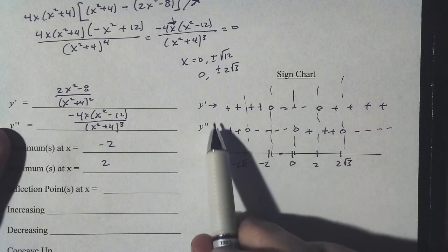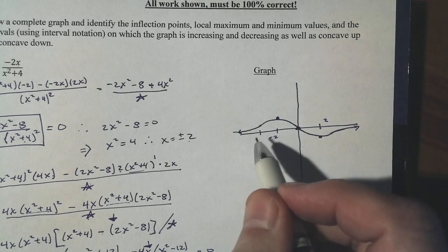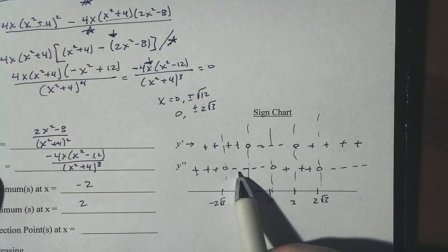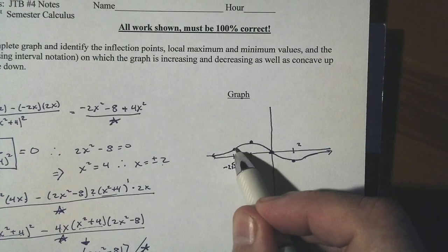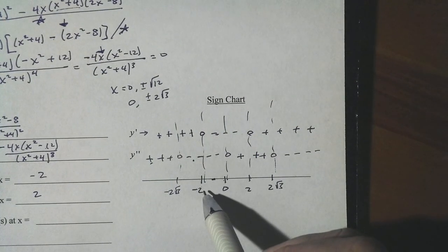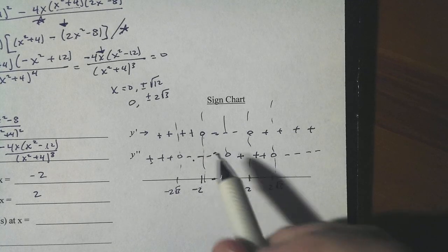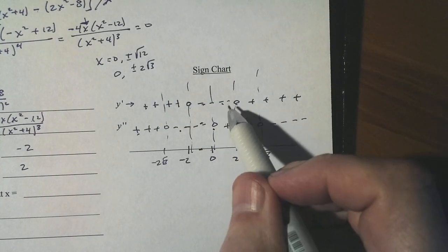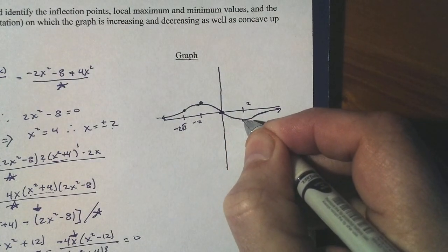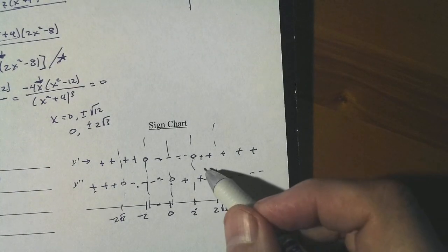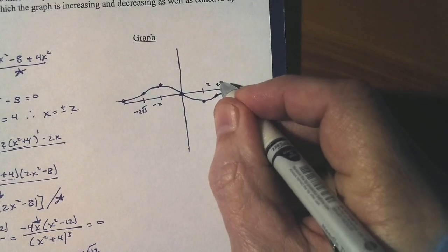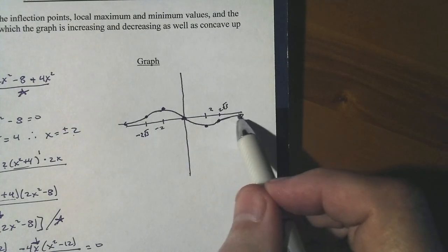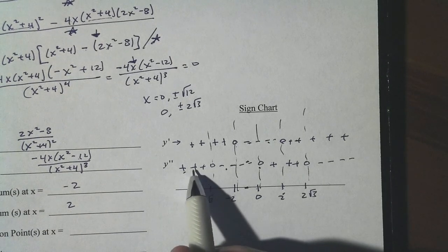Reading the graph: from the left, the graph is going up cupping up until negative 2 root 3; then going up but cupping down until negative 2; then going down cupping down until 0; then going down but cupping up until 2; then going up cupping up until 2 root 3; and after that going up cupping down. I feel really good about that graph.